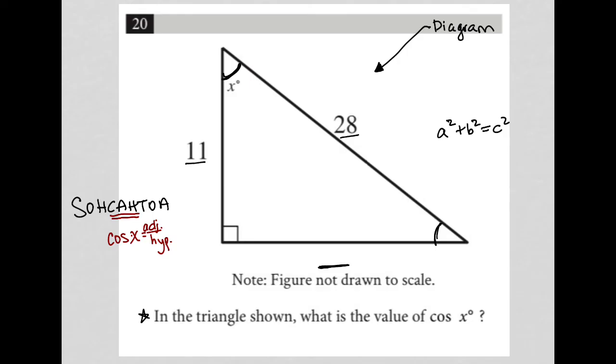So x - what's adjacent to x? That would be 11, so my adjacent side is equal to 11. What's the hypotenuse? Well, the longest side, that would be 28, so this becomes 11 over 28. So the cosine of x is equal to 11 over 28. I in fact did not need to figure out this missing side here at all given the wording of this question.